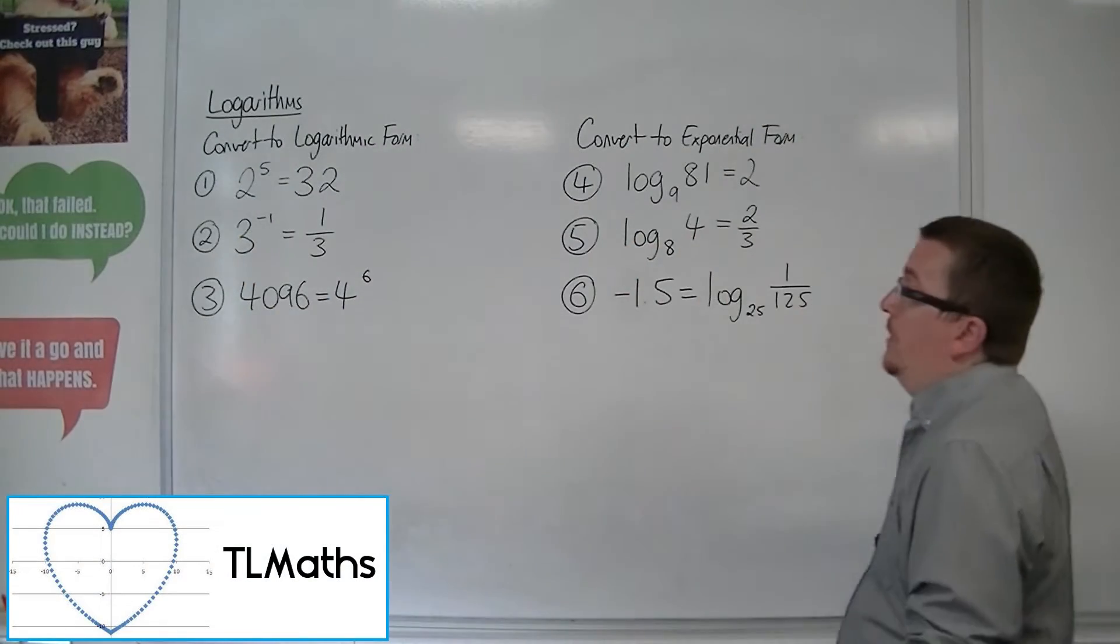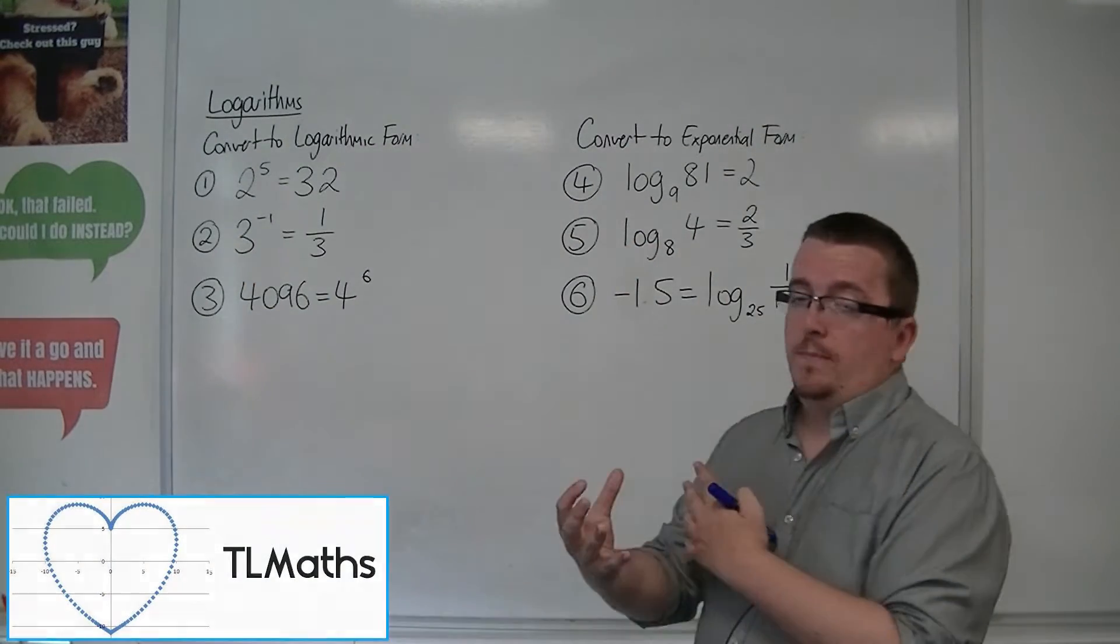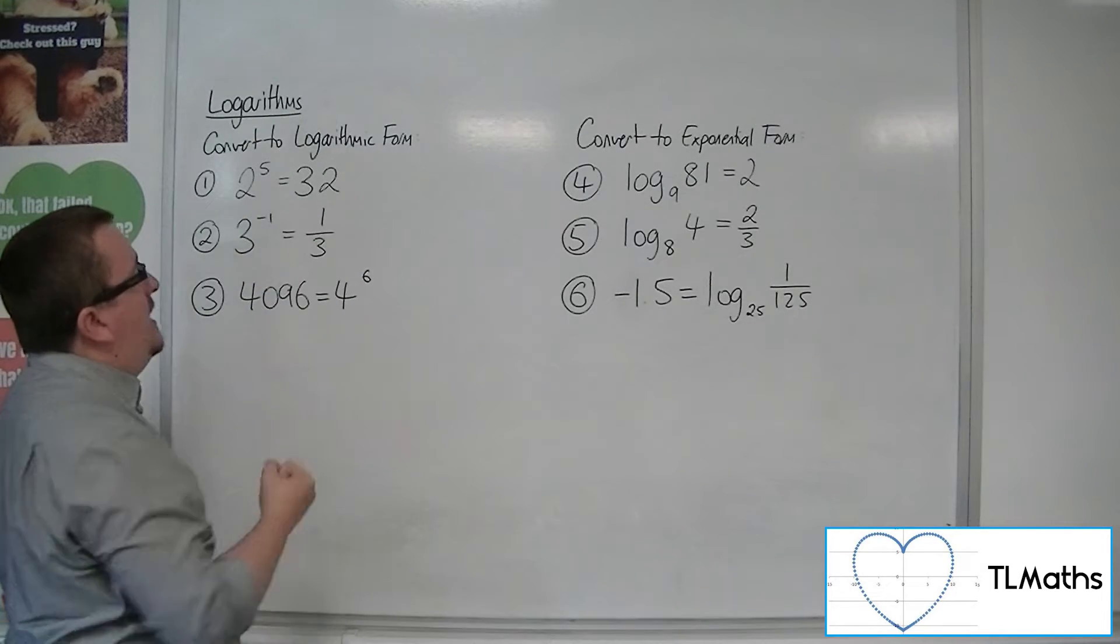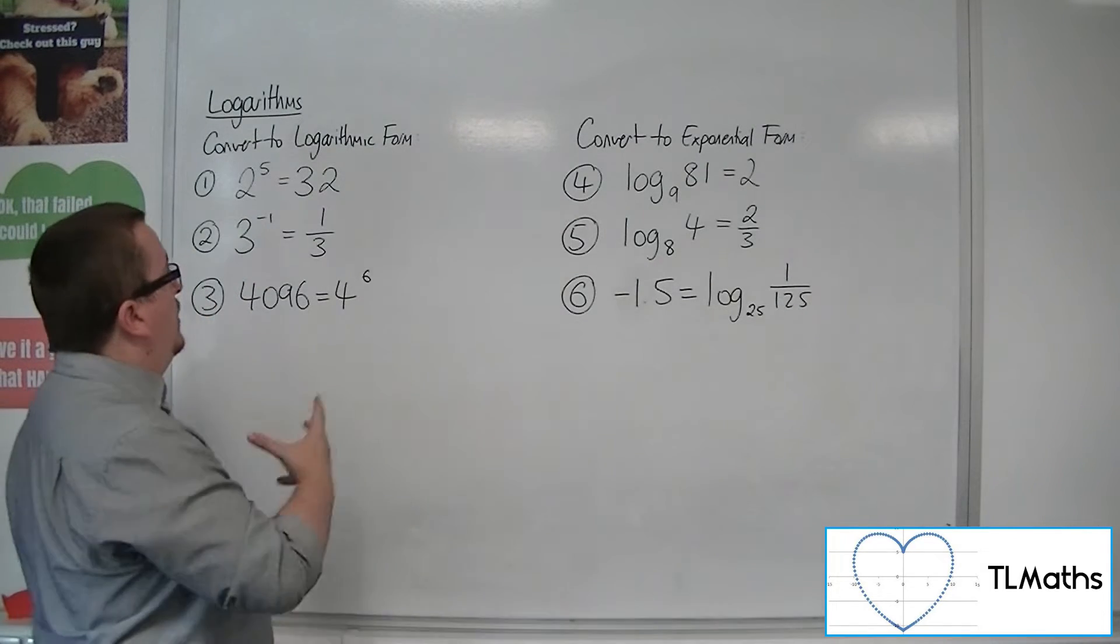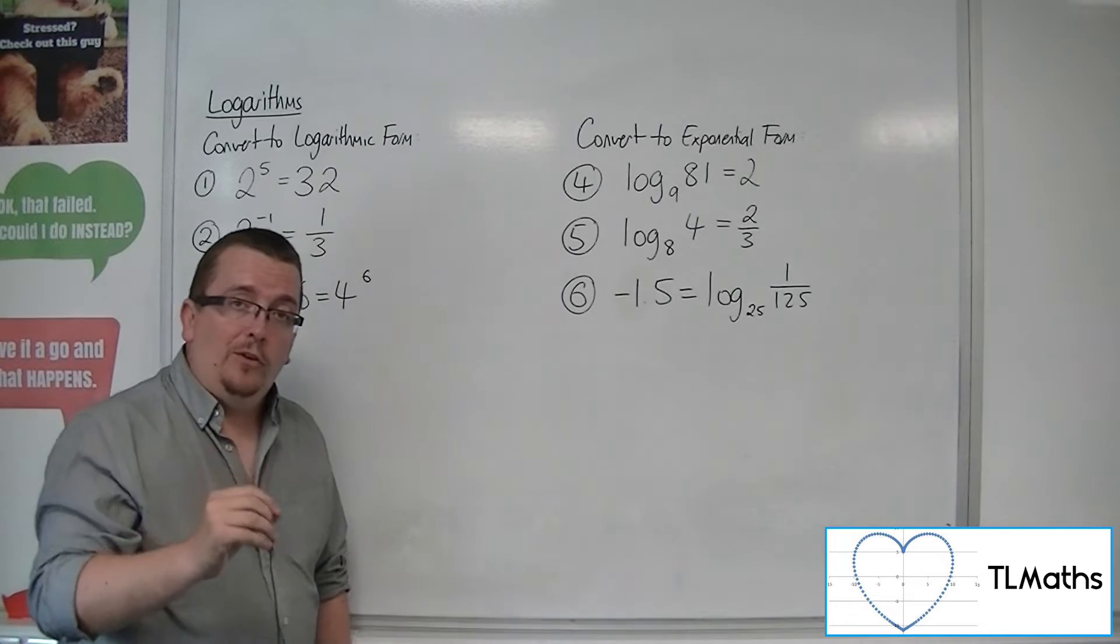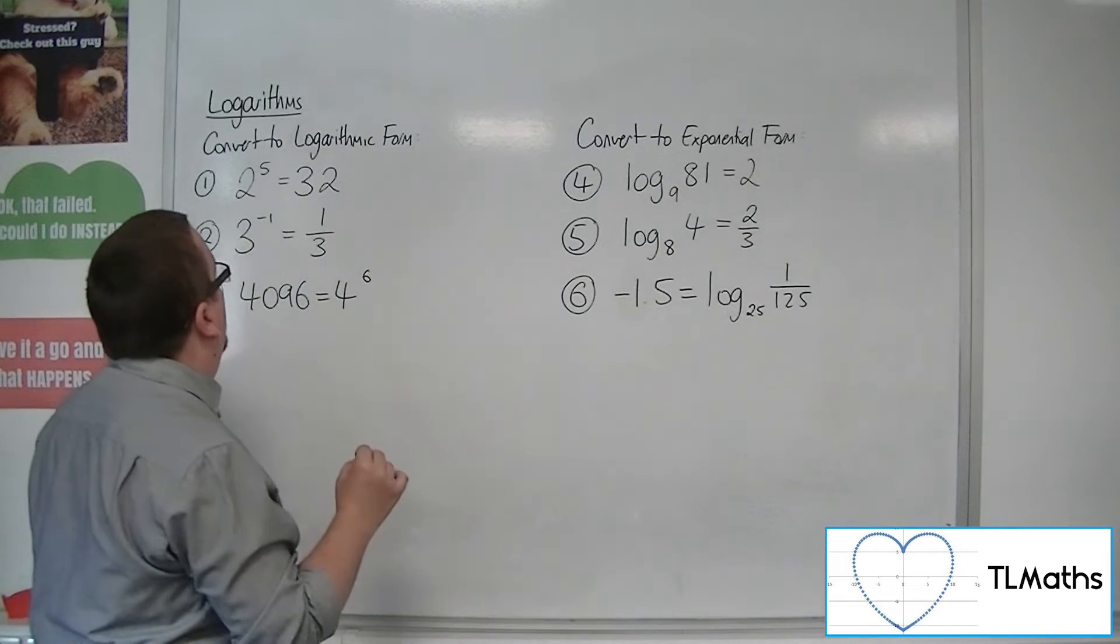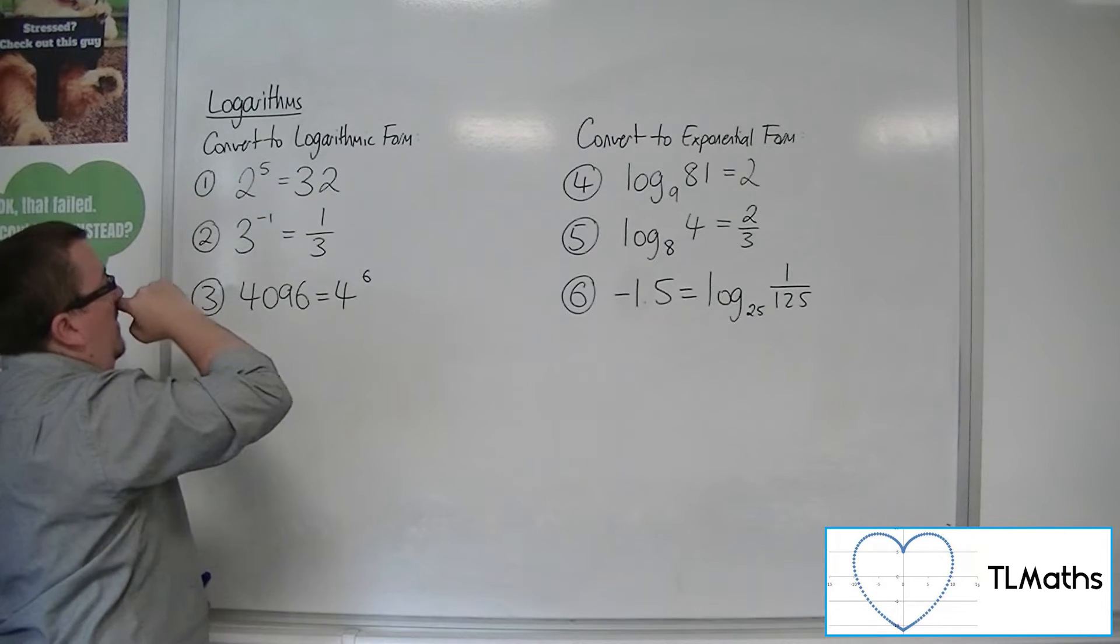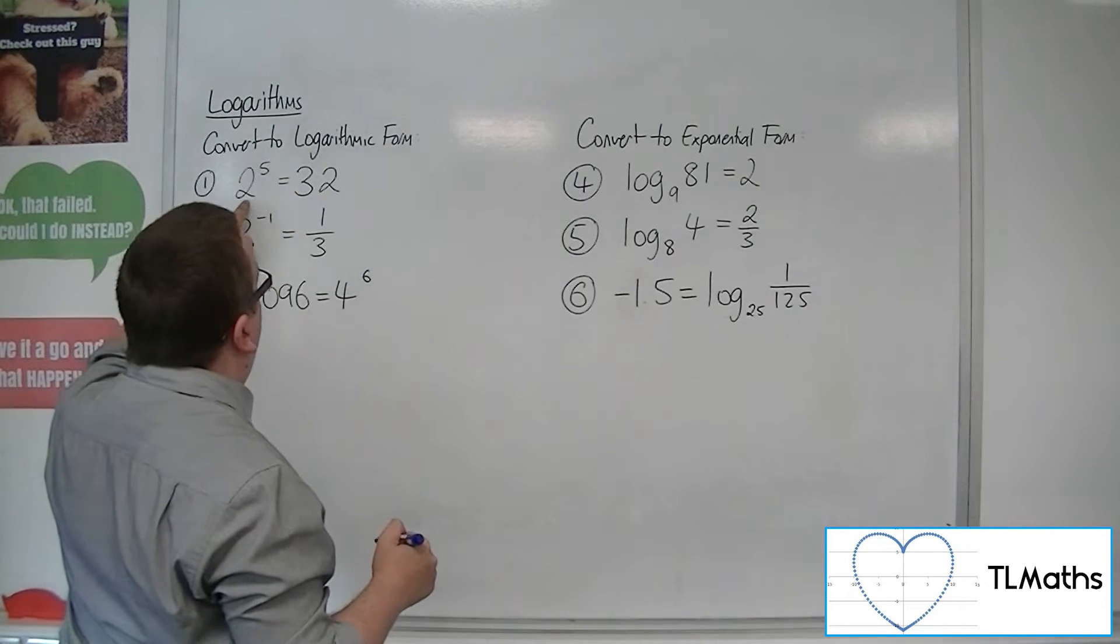Okay, so let's say I want to convert between logarithmic and exponential form. So these three are currently in exponential form. I want to convert them to logarithmic form. So how you do this is you're looking for the base number. The base number is the number that has the index. So the base number here is 2.